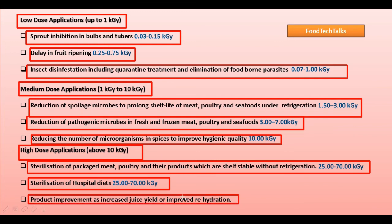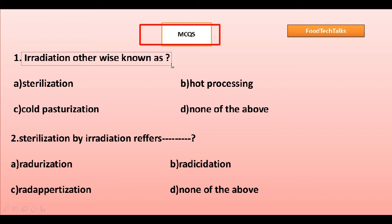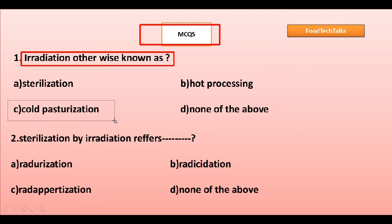Let us end this video by solving some MCQs related to food irradiation. First question: irradiation is otherwise known as — options are sterilization, hot processing, cold pasteurization, or none of the above. Option C is the right answer: cold pasteurization, because in irradiation there is no or very little heat produced.